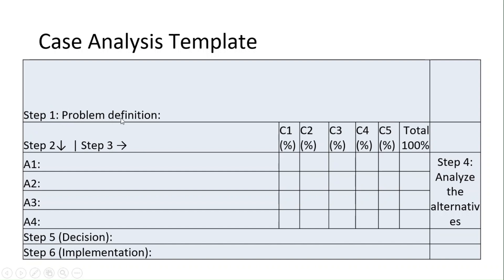Step one is P for problem identification or problem definition. Step two is listing out all the different alternatives. You see that there are four alternatives mentioned here, but you may have three to five alternatives — that is the optimal way of analyzing a case.